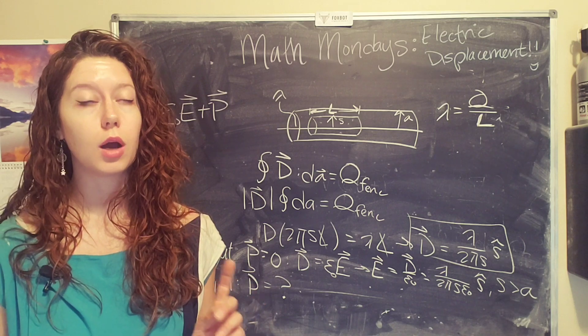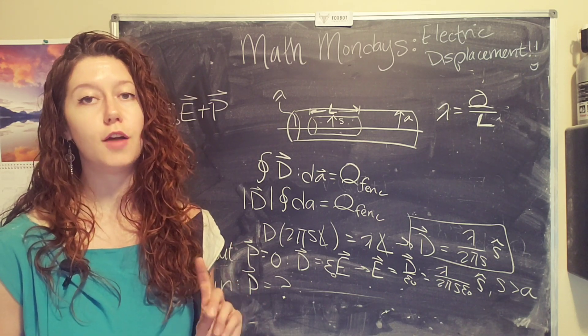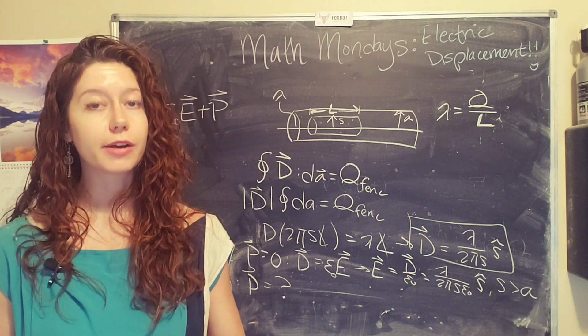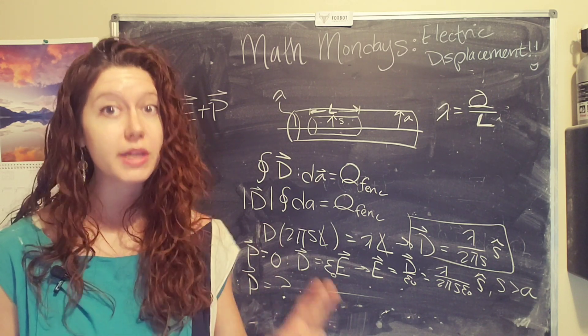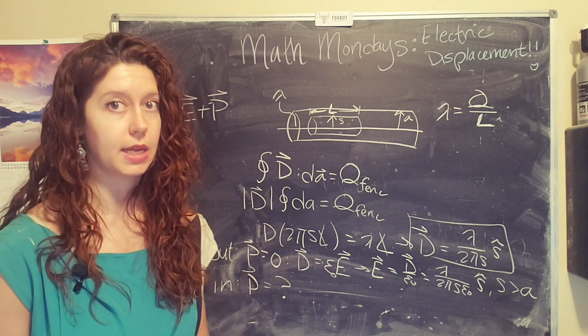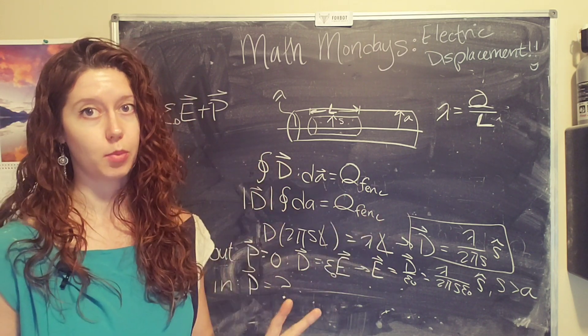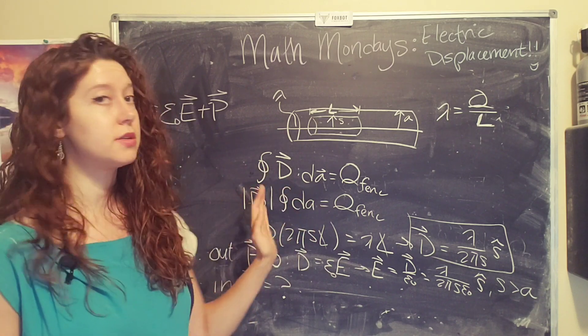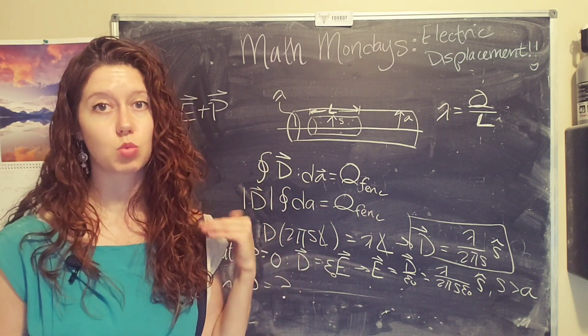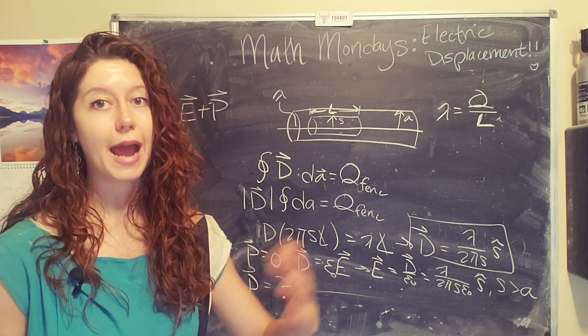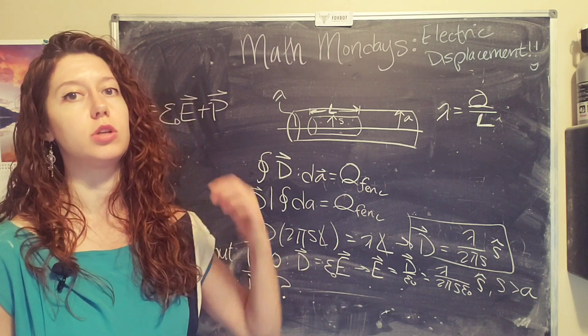But there's no Coulomb's law for the electric displacement. So the electric field and the electric displacement cannot be treated the same. And it's really important to keep the two separate. The electric displacement is used in instances where we have a dielectric that is polarized. And outside of those applications, you should use the electric field.